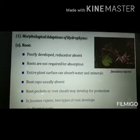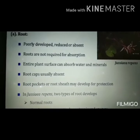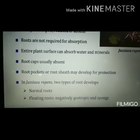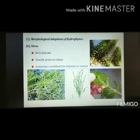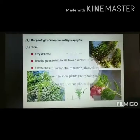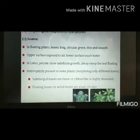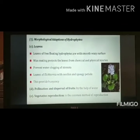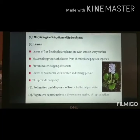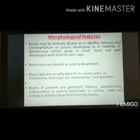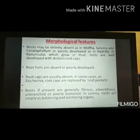The ecological adaptations of hydrophytes include a poorly developed root system, since the entire surface can absorb water, and root caps are usually absent. The stem is very delicate and usually greenish in color. Leaves are free-floating, with waxy cuticle on the upper surface. Pollination with the help of water is common, and vegetative reproduction is the predominant method. Roots may be entirely absent in some plants like Wolffia and Salvinia.